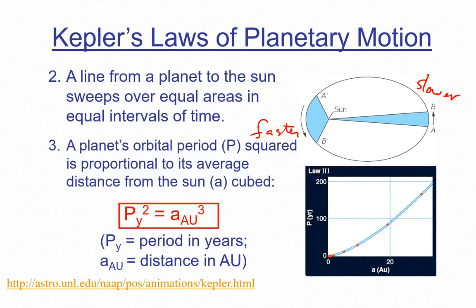Kepler's third law: there is an equation relating the period — the time for something to repeat — to the average distance from the planet to the sun. Period squared equals the semi-major axis cubed, where the period is in years and the semi-major axis is in astronomical units. For Earth, one AU cubed is one, so period squared equals one, and the period is one year. That's why we use years and astronomical units.